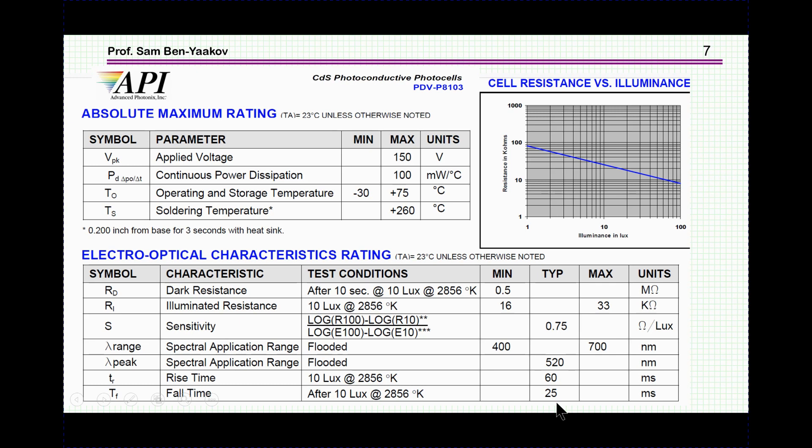It's not capable of following fast changes. And also what doesn't say here, this timing is really depending on the operating point. It's different, for example, if you go from 100 lux to say 1,000, usually it'll be much smaller than that. So this is the worst case, because this is when the resistance is very high.